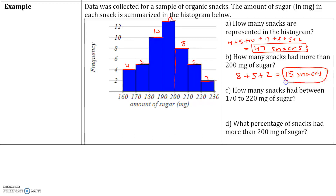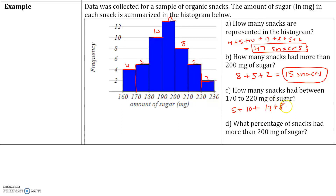Be sure to always include your units. How many snacks had between 170 to 220 milligrams of sugar? We have 5 between 170 and 180, 10 between 180 and 190, 13 between 190 and 200, 8 between 200 and 210, and 5 between 210 and 220. We stop there because we don't want to go to 220 and 230 — that's more than 220. If we add these up, this gives us a total of 41 snacks.